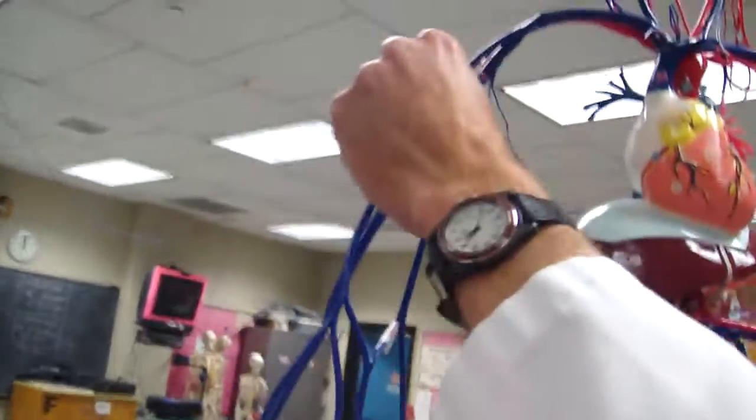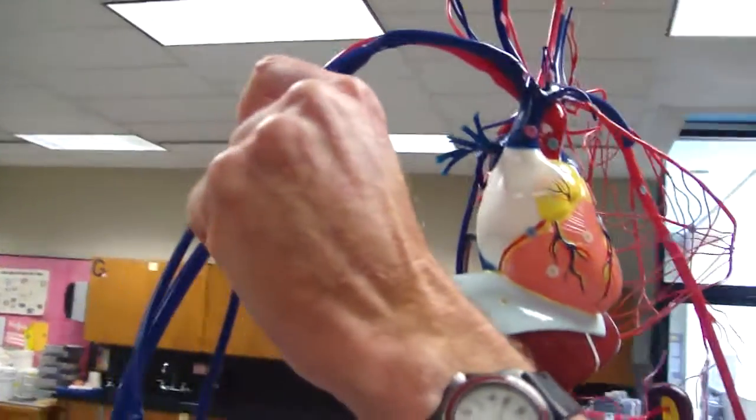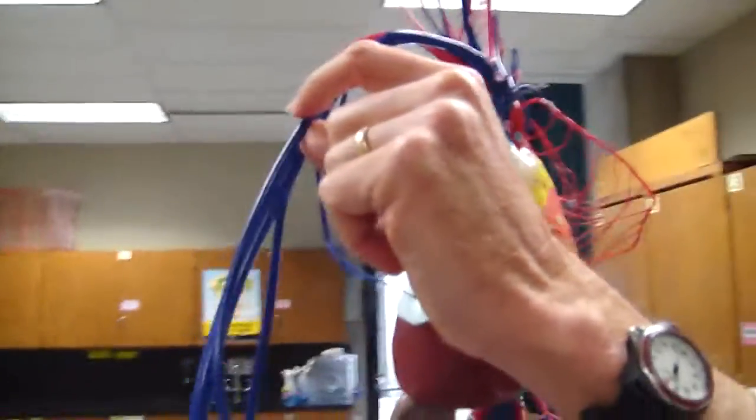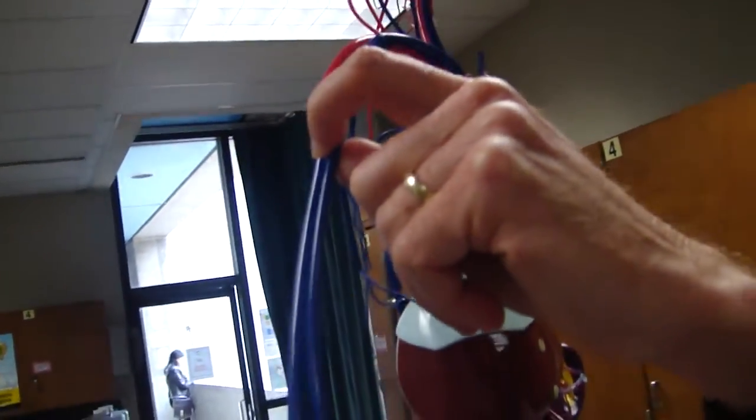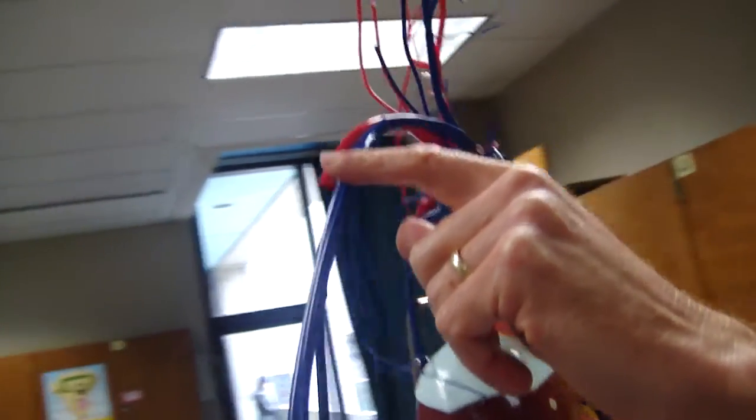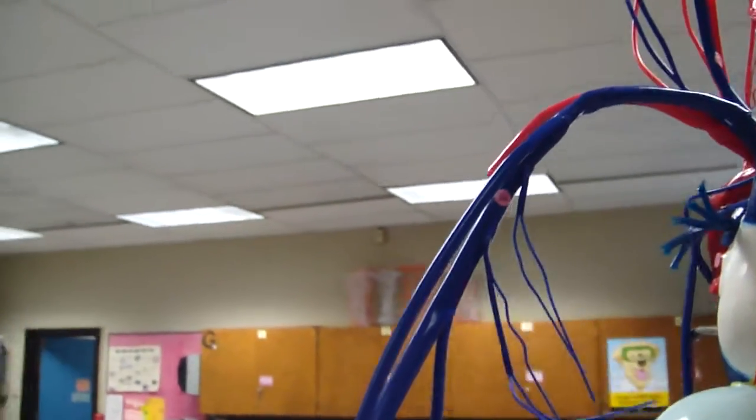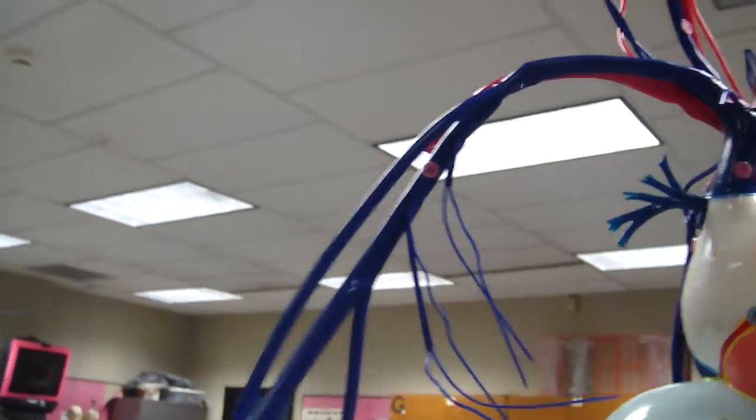This branch up here, which if we had it on a real skeleton or cadaver, this is cephalic. And I think the easiest way to remember it, if you look in your book, you'll see it goes over the head of the humerus. Hence, cephalic. It goes over the head.